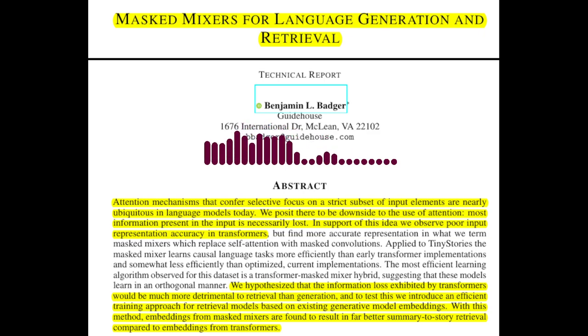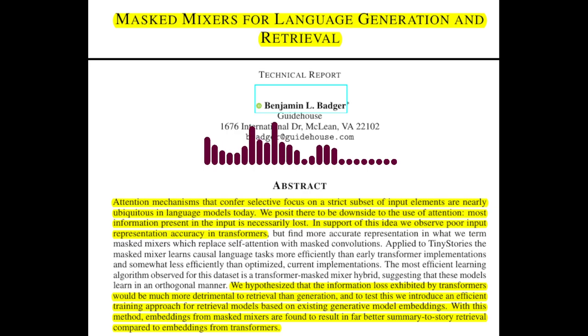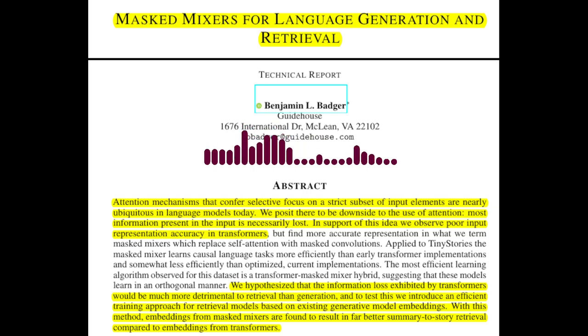Today we're diving into a paper that challenges the dominance of attention mechanisms in language models. 'Masked Mixers for Language Generation and Retrieval' proposes an alternative architecture that replaces attention with masked convolutions.